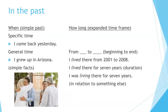From A to B — from beginning to end of a time period. I lived there from 2001 to 2008. I lived there for seven years — it's talking about duration. I was living there for seven years. When we use the past continuous tense, it's usually in relation to something else. For example, I was living there for seven years while my wife was at the university.